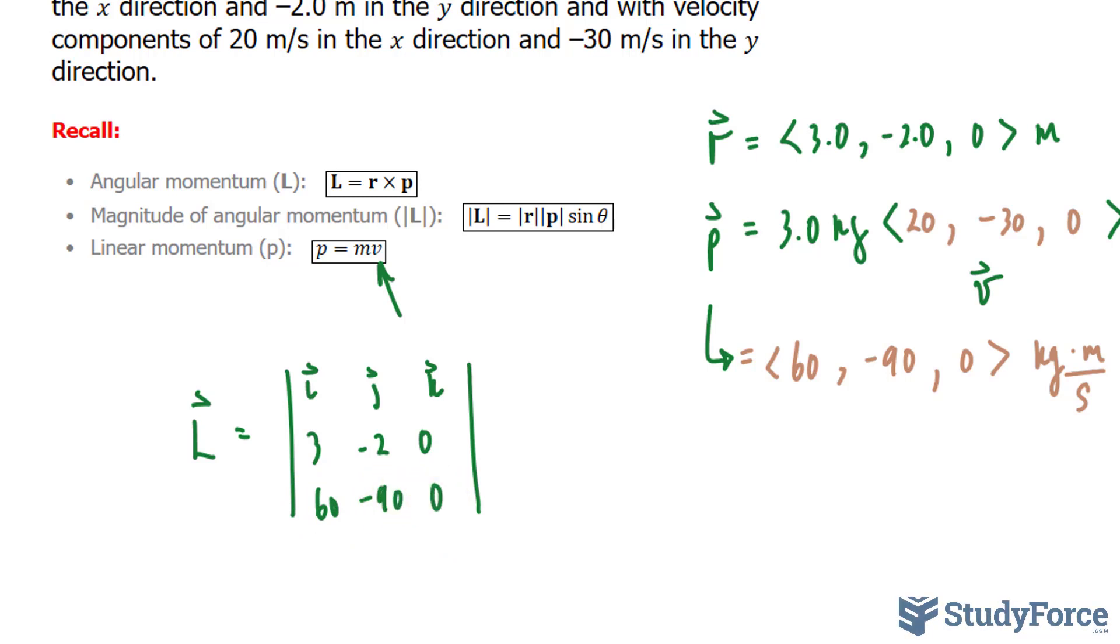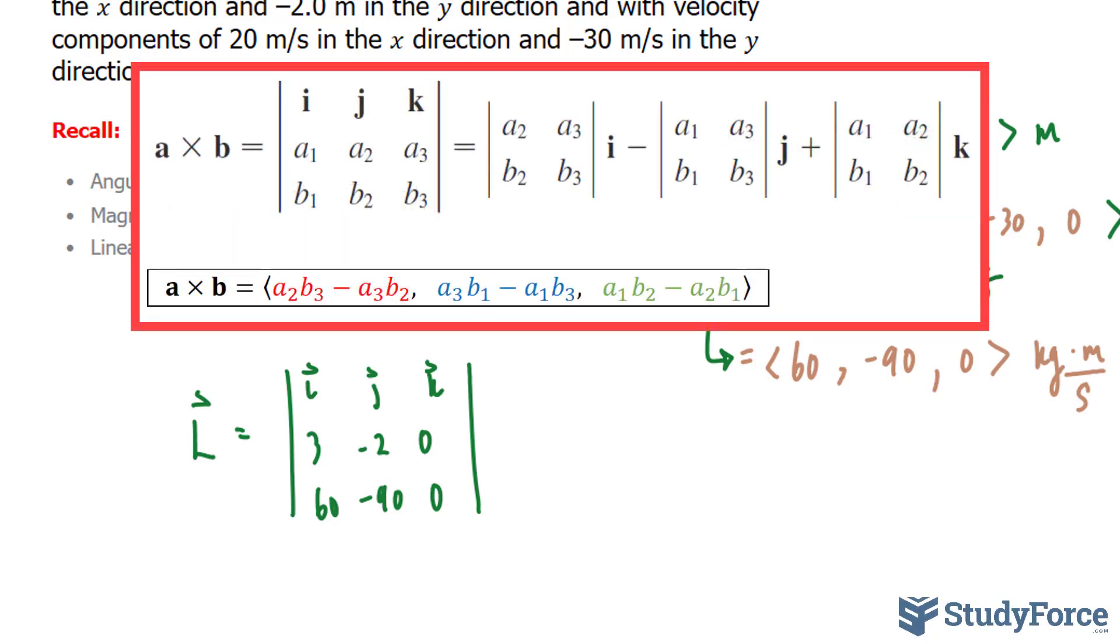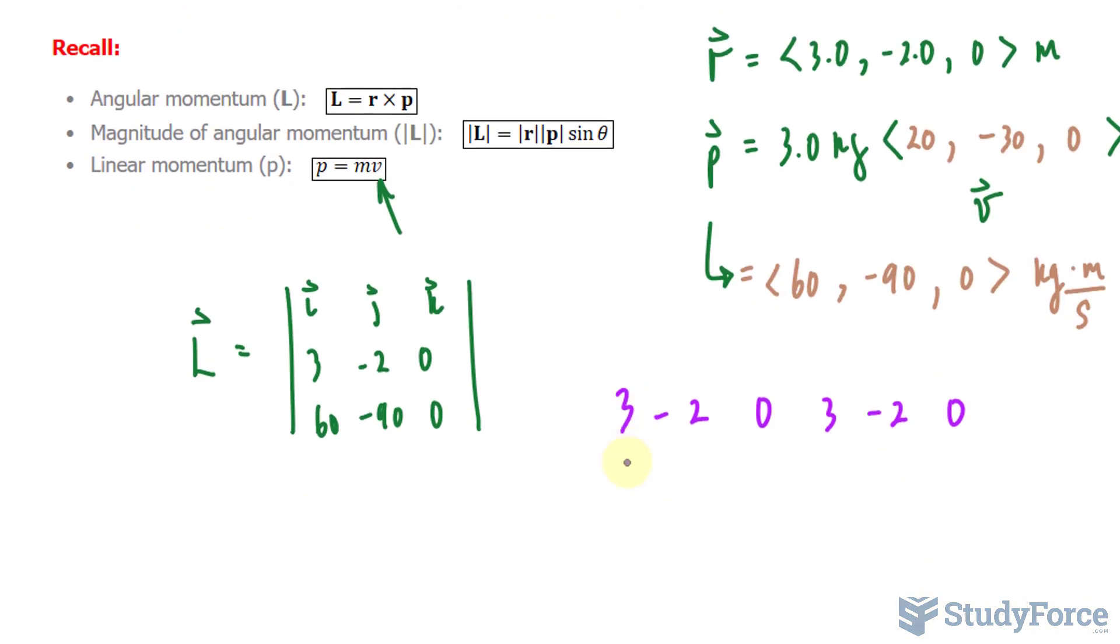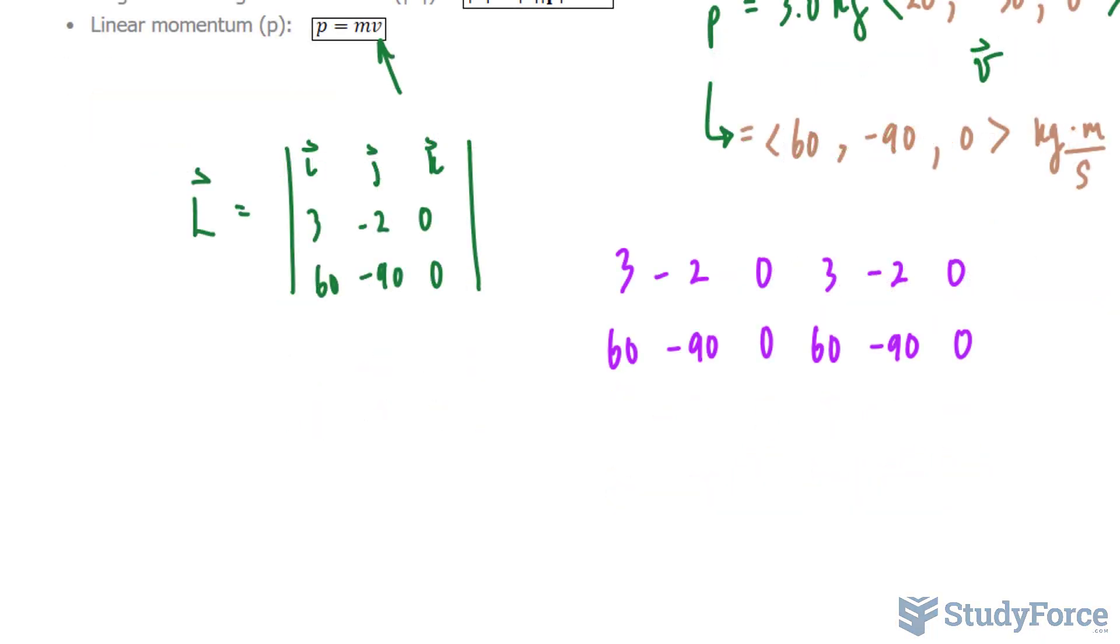We do have a video on how to find the determinant of a 3 by 3 matrix. In that video, you'll learn that it's as simple as following a formula shown on your screen right now. You could choose to follow this formula, or you can use a trick also discussed in that video, where we write this sequence of numbers down twice.